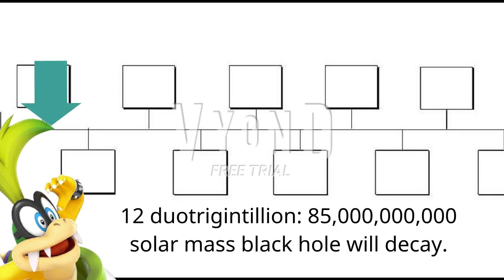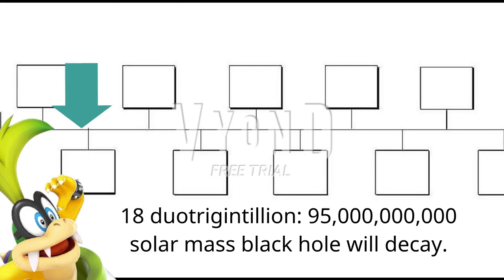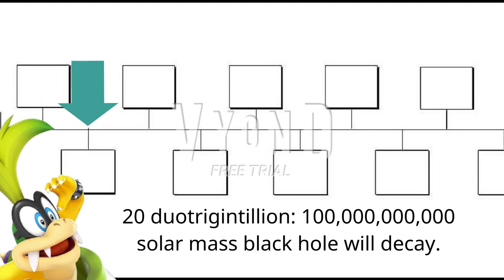12 Duotrigentillion: an 85 billion solar mass black hole will decay. 15 Duotrigentillion: a 90 billion solar mass black hole will decay. 18 Duotrigentillion: a 95 billion solar mass black hole will decay. 20 Duotrigentillion: a 100 billion solar mass black hole will decay. 70 Duotrigentillion: a 150 billion solar mass black hole will decay.